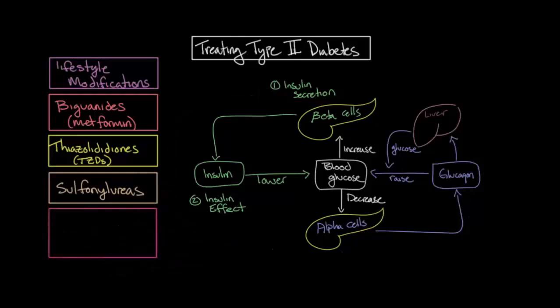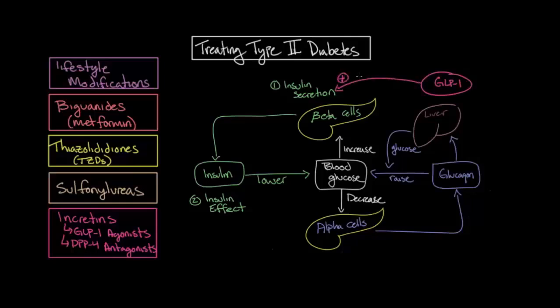The last two groups of type 2 diabetes medications act upon the incretin pathway, and are therefore known as incretins. They are the glucagon-like peptide-1, or GLP-1 agonists, and the dipeptidyl peptidase-4, or DPP-4 antagonists. Incretins, such as GLP-1, are hormones that have two synergistic effects that result in the lowering of blood glucose levels. First, they directly stimulate the release of insulin from the beta cells in the pancreas. And second, they inhibit the release of glucagon. DPP-4, on the other hand, is an enzyme that inhibits the action of GLP-1.